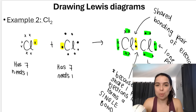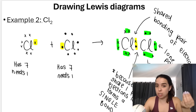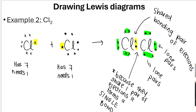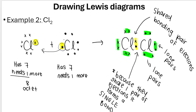For Cl2, a diatomic molecule: chlorine has seven valence electrons and needs one more to reach octet. The second chlorine also has seven and needs one more. They share one pair of electrons — the shared bonding pair goes to the middle — forming a single bond. All the remaining electron pairs are lone pairs.